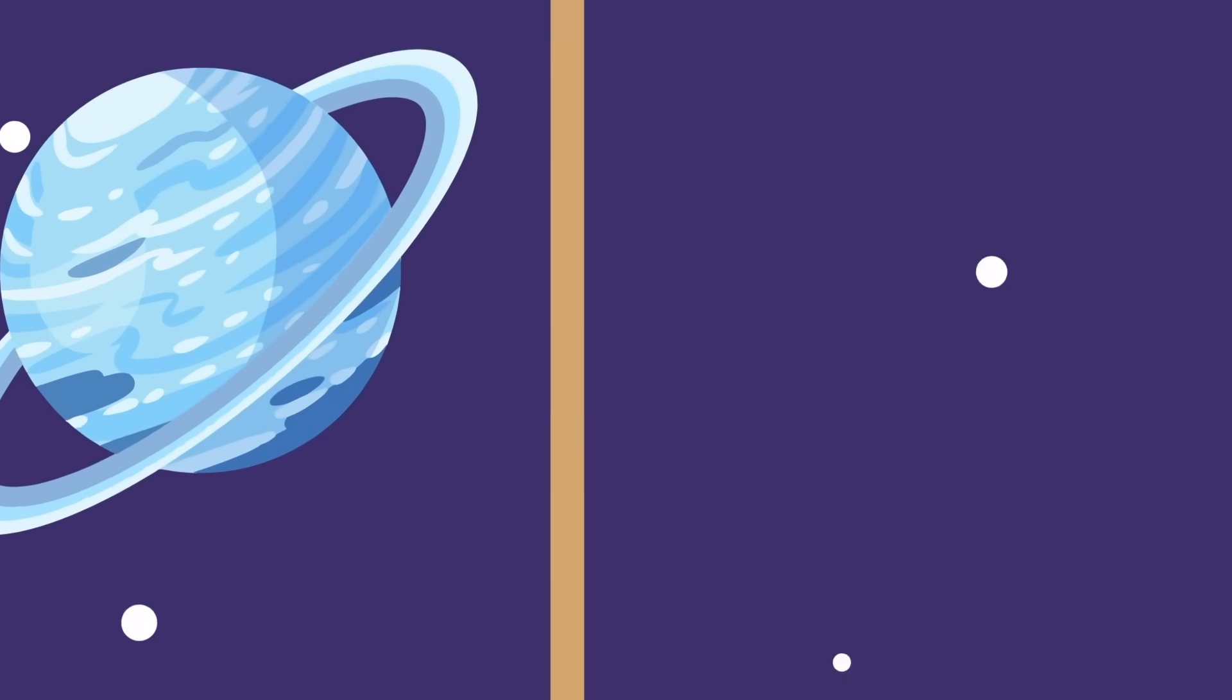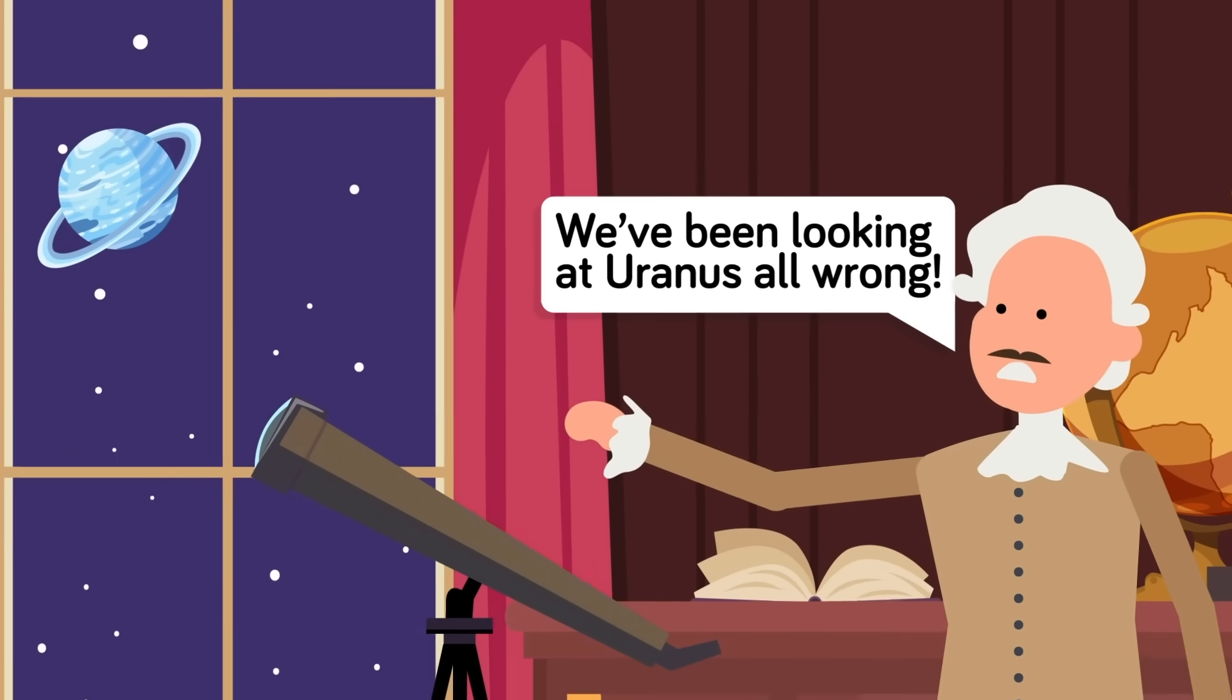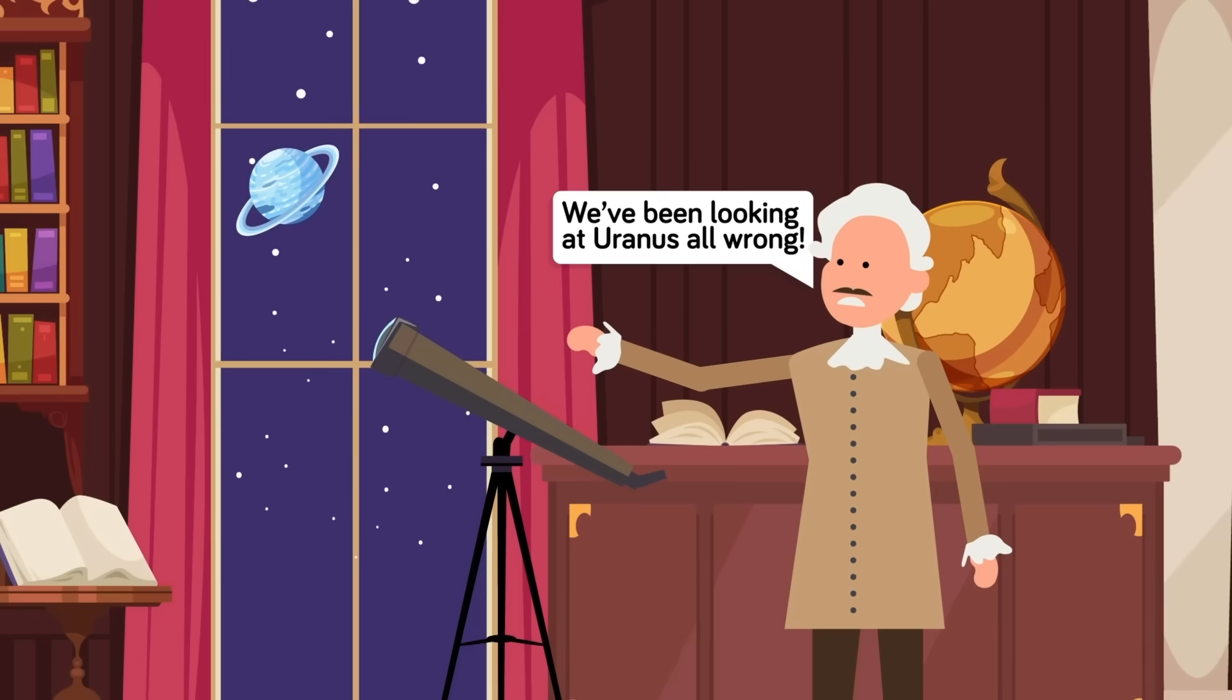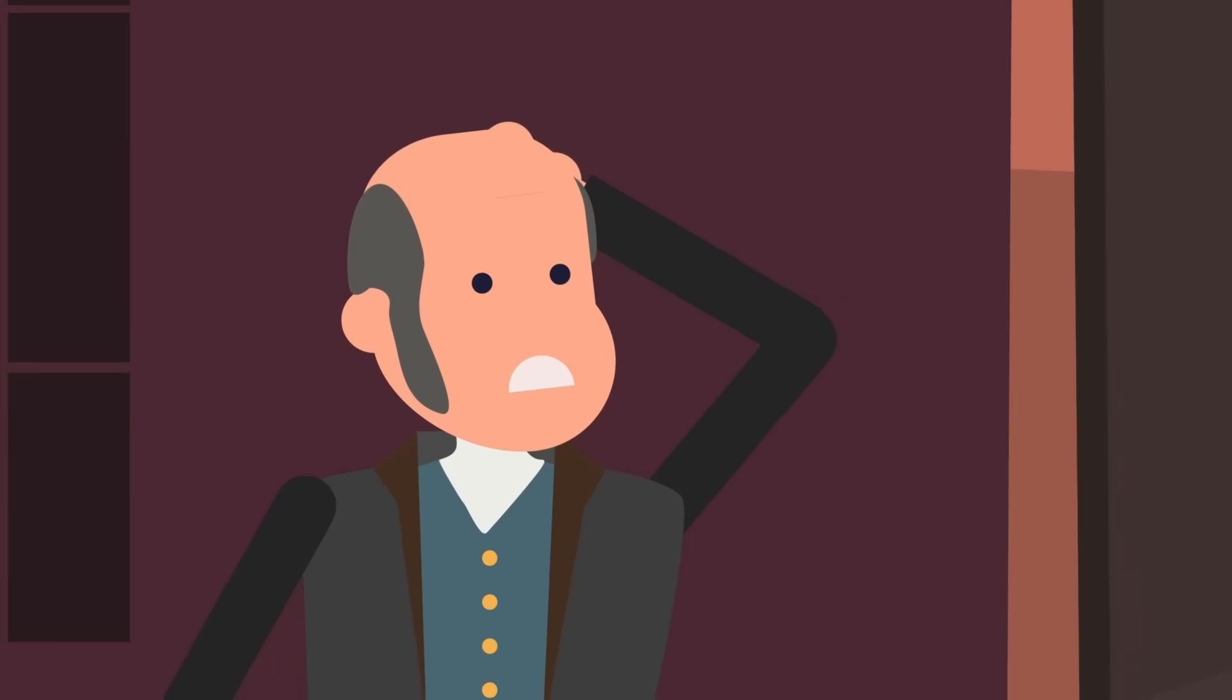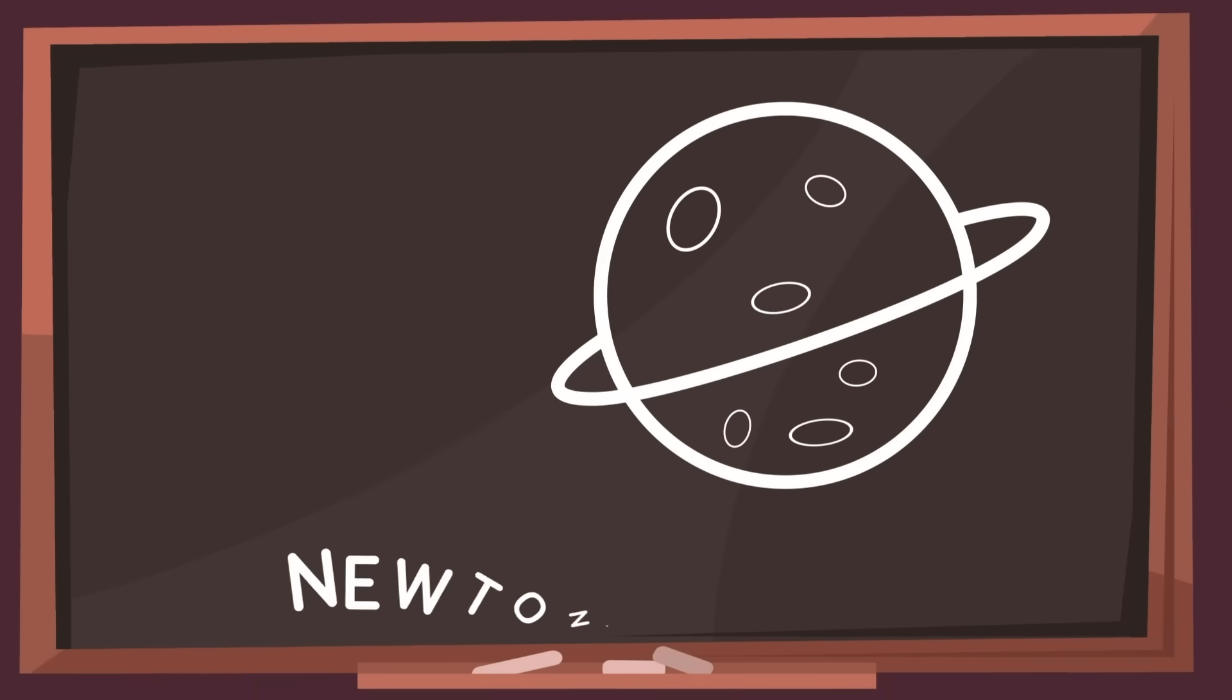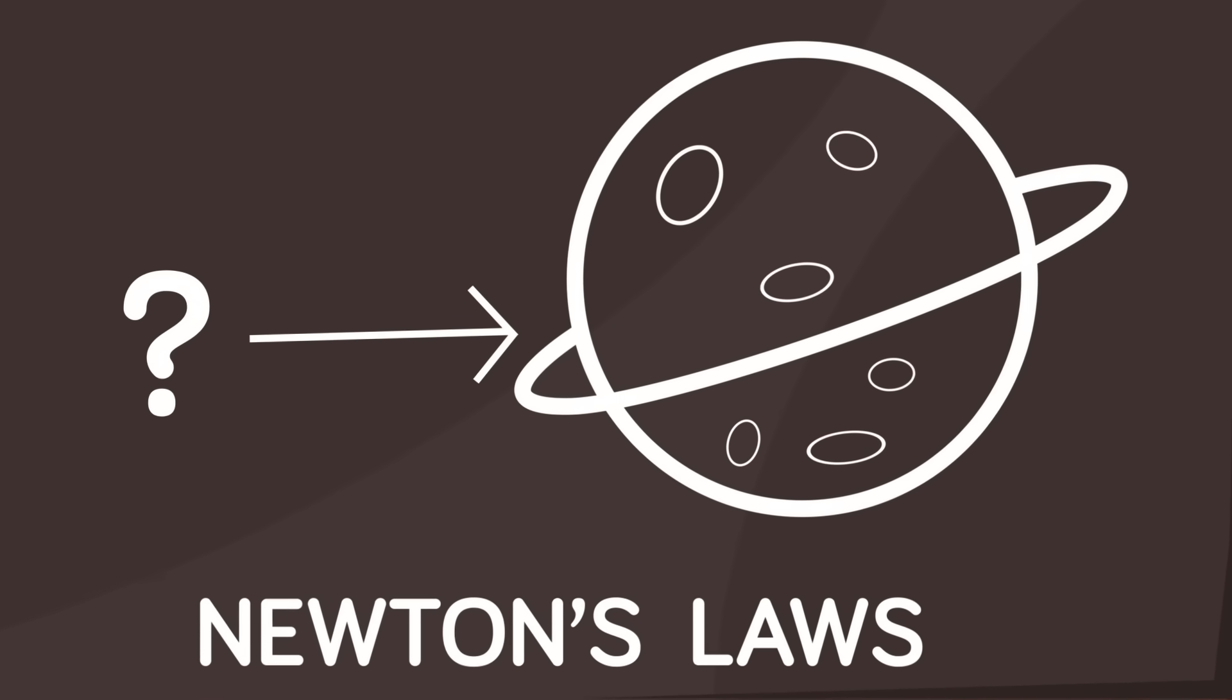At least, that was one of the theories proposed. Others believed that at the great distance that Uranus orbited the sun, Newton's laws simply didn't work like they do closer to the sun. For John Couch Adams, such thinking was heretical. By using Newton's own laws, Adams set about to prove that there was something else having an effect on Uranus.